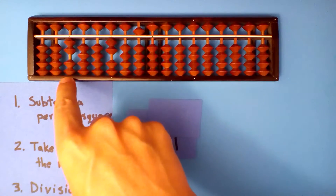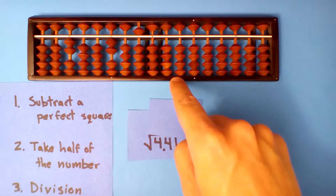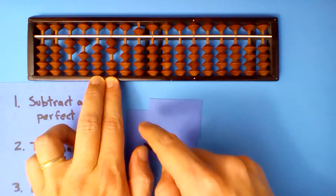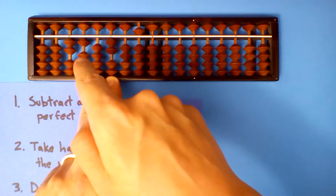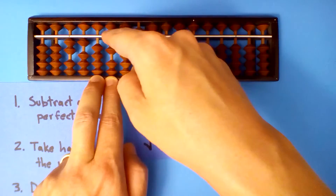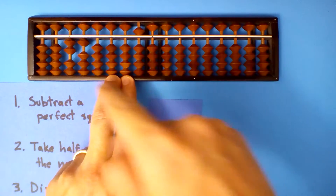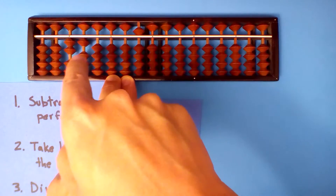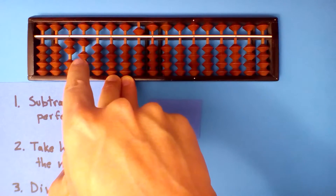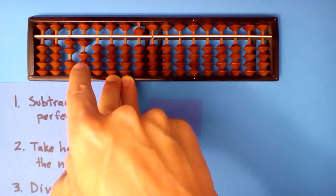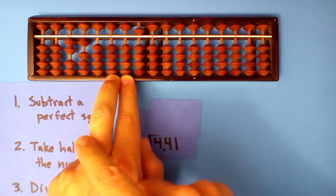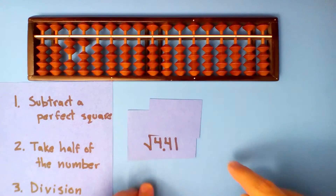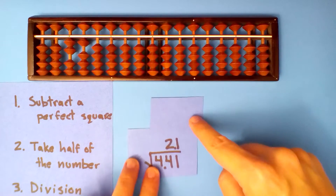Now we divide this number into this one. Two goes into two once. Multiply and subtract: one times two is two, and one times itself is one. But on the very last number, when we multiply the new number by itself, we just take half. So one times one is one and half of that is 0.5. We're finished. Our root is 2.1.